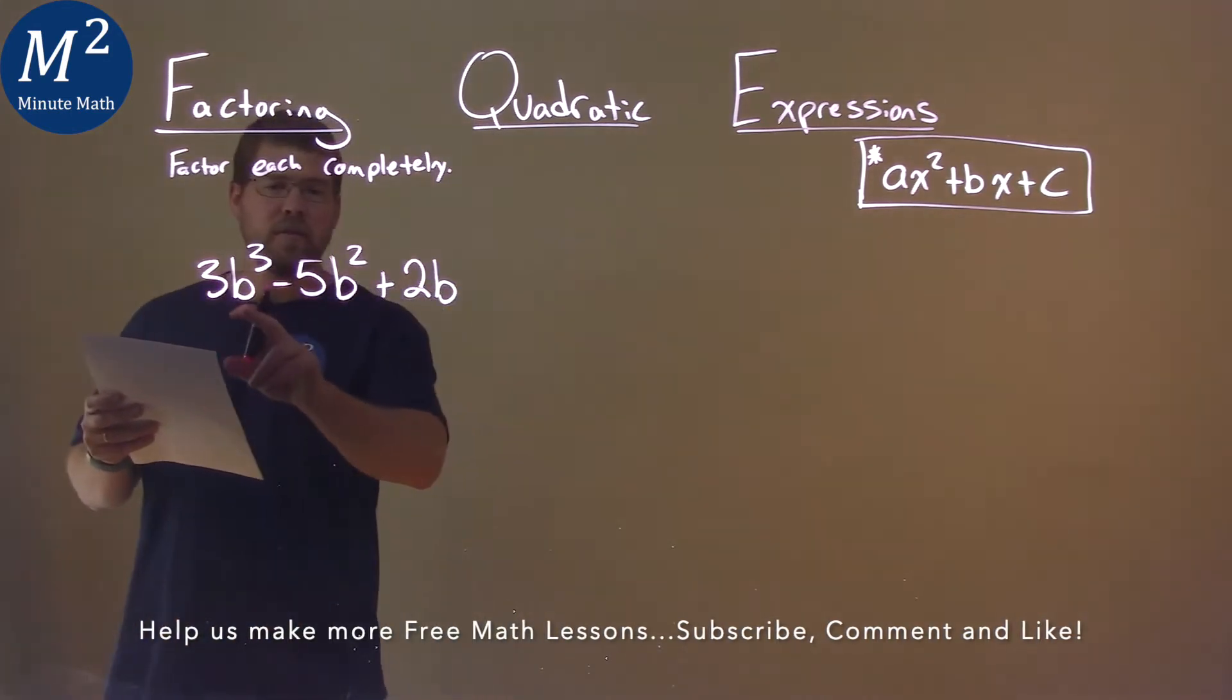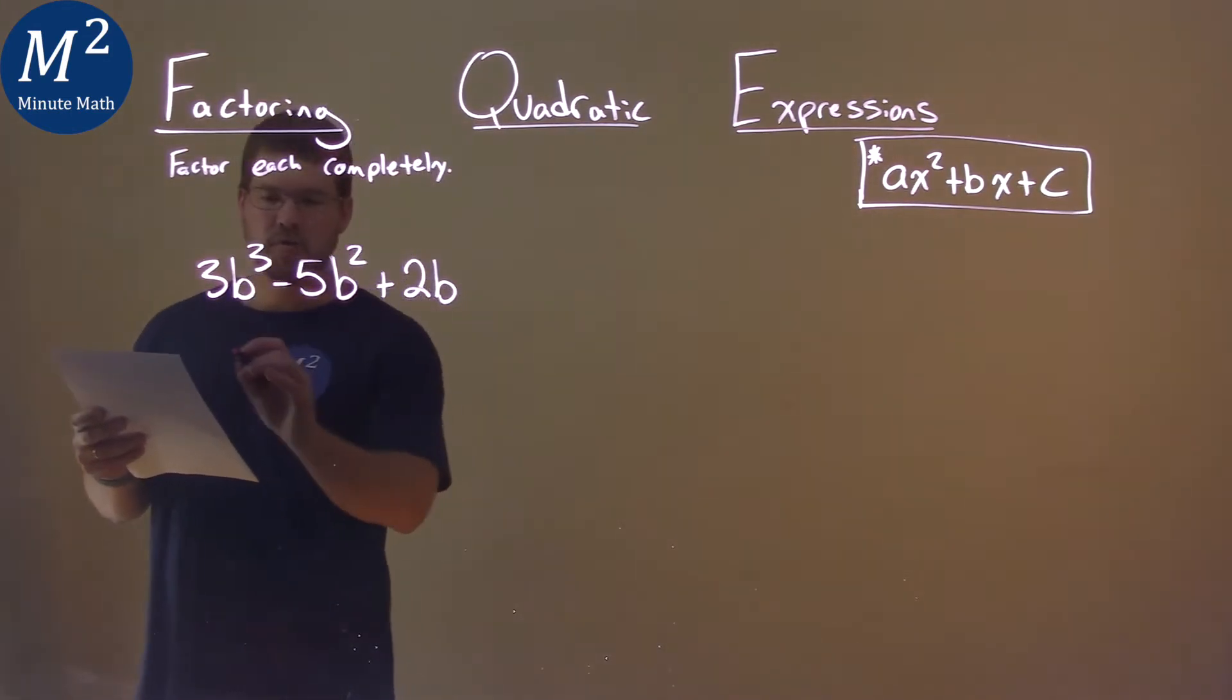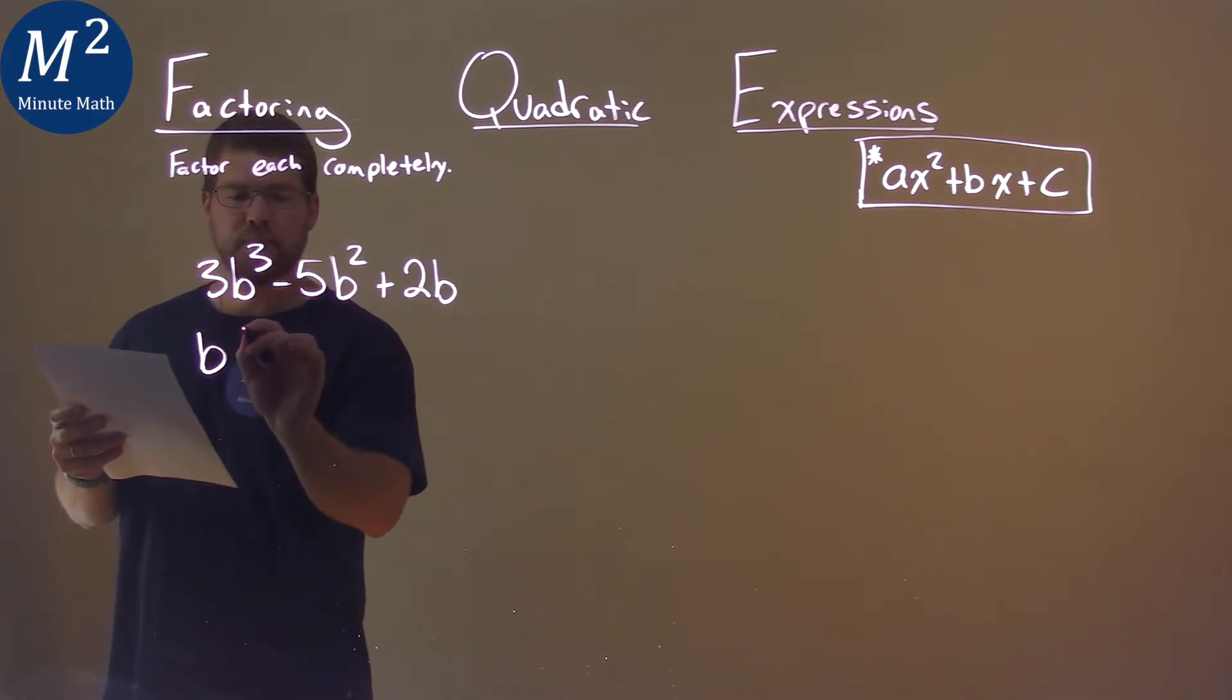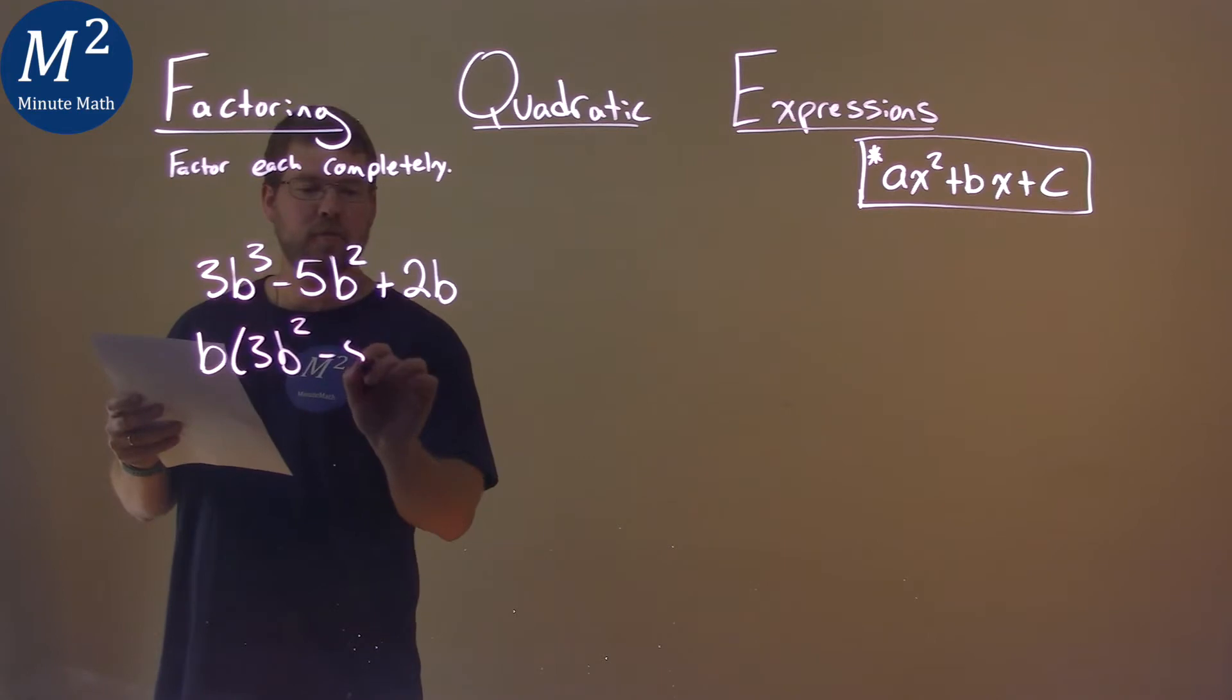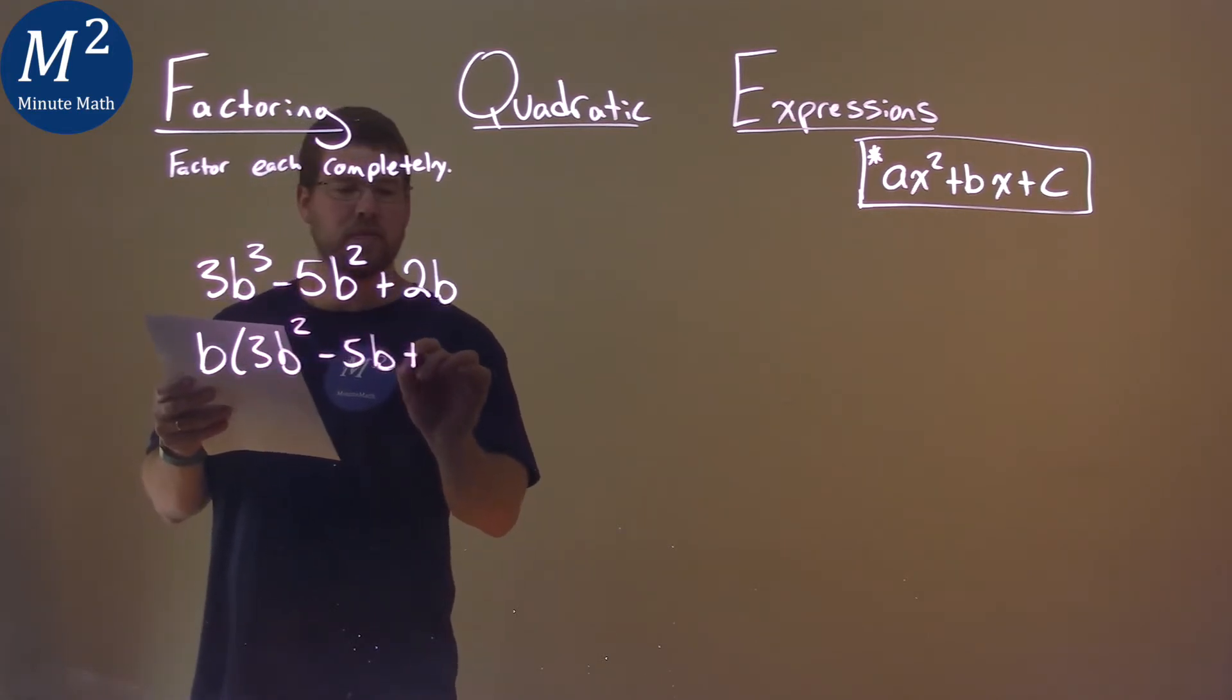Notice here that there's a b in all three parts, so let's pull that out quickly. Pull out a b, and we're left with 3b squared minus 5b plus 2.